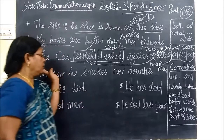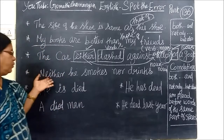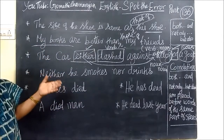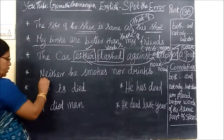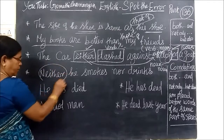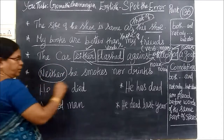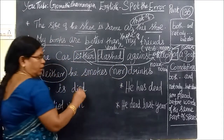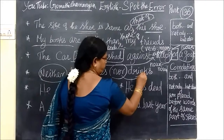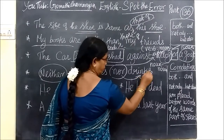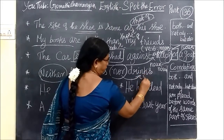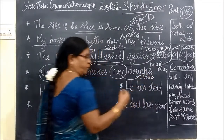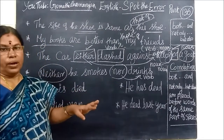Come to the next one. Neither he smokes nor drinks. This is neither/nor. 'He' is the noun, 'smokes' is the verb. So the verb follows the correlative.